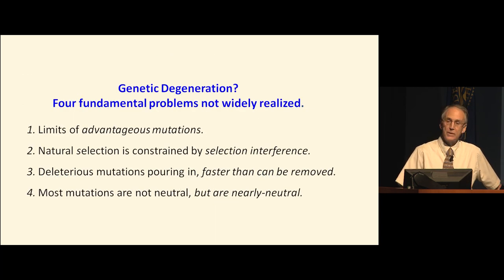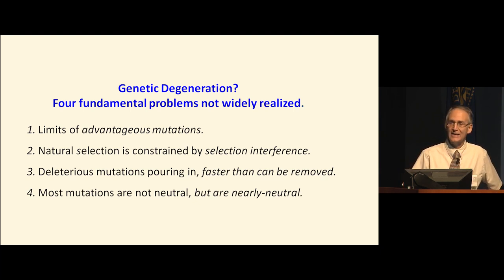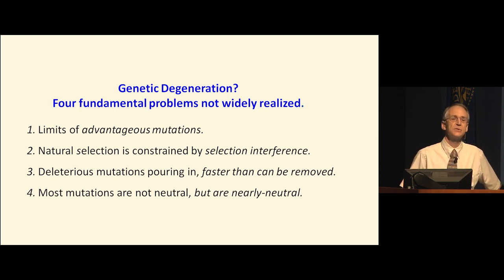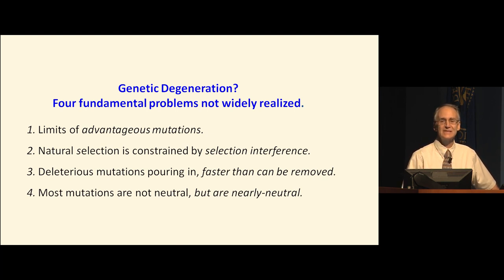On what basis should we be concerned about genetic degeneration? There are four fundamental problems that are not widely understood. The first one is there are limits to what advantageous mutations can do. Advantageous mutations might counteract the effect of the flood of deleterious mutations entering the human population. But beneficial mutations are rare and seldom can make the type of compensation that's needed to stop the net loss of information.